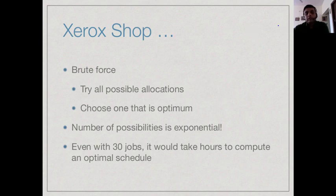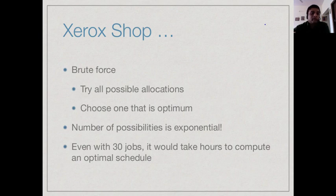There is always in the background what is called a brute force approach. You could try every possible order of allocating photocopying jobs to machines and choose the one which gives the best return. The problem is that it will take a very large amount of time because the number of possibilities is exponential. Even with just 30 requests it would take several hours to find an optimal schedule — and in those hours you might as well have done the work and gotten some money for it, even if not optimally.